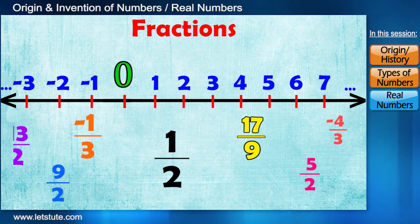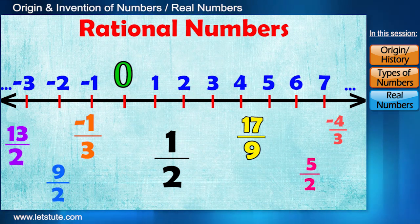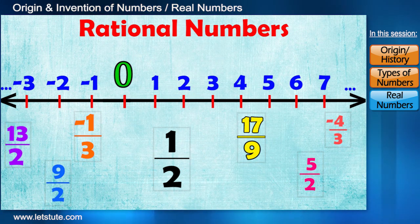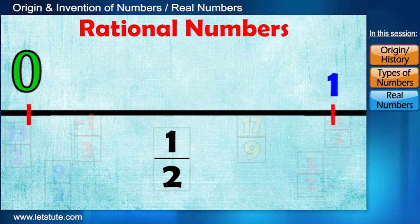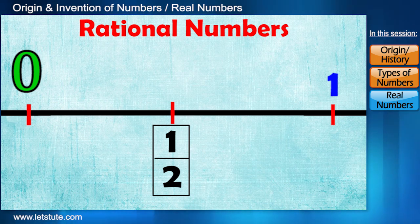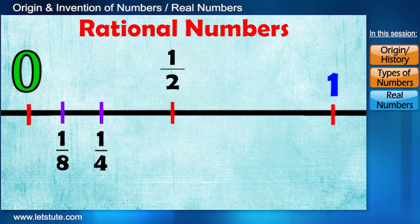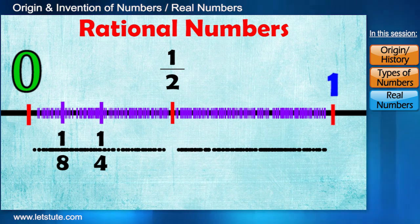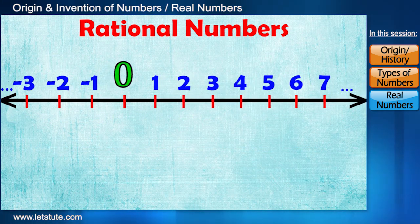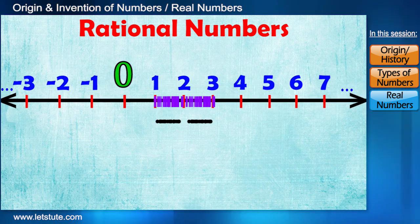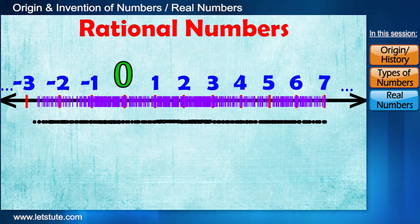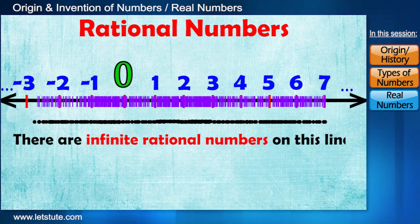So friends, such fractional numbers are called rational numbers because they are ratio of integers. Let's now zoom zero to one unit path. Between zero and one we have number half, exactly in the middle. Then between zero and half we have one by four, then one by eight, and like these there are many numbers between zero and one which we even can't count. And same will happen between one and two, two and three, minus one and zero, and so on. And therefore we conclude that there are infinite rational numbers on this line.